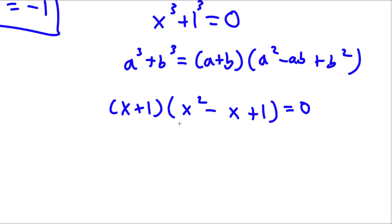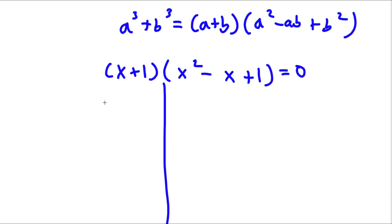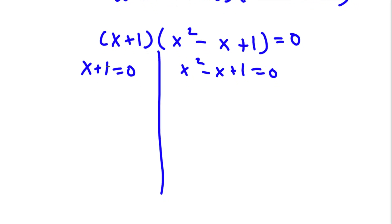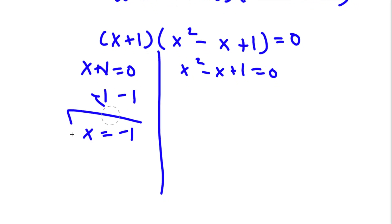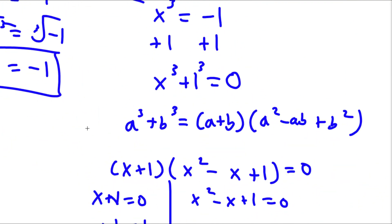So now this gives me two equations. I have x plus 1 equals 0, and I have x squared minus x plus 1 equals 0. For x plus 1 equals 0, we simply subtract 1 on both sides, and we get x equals negative 1. And this is the solution we already got.